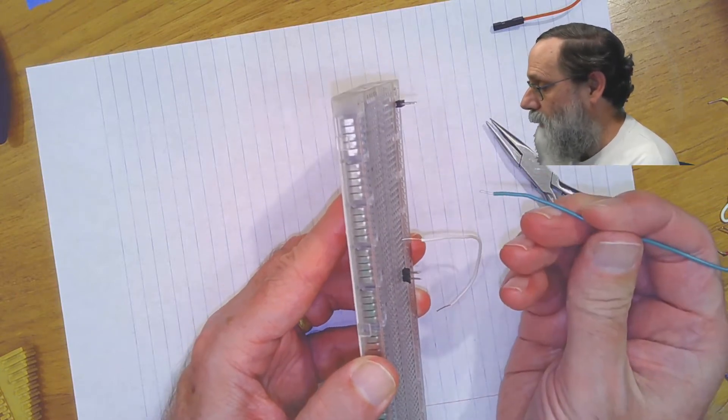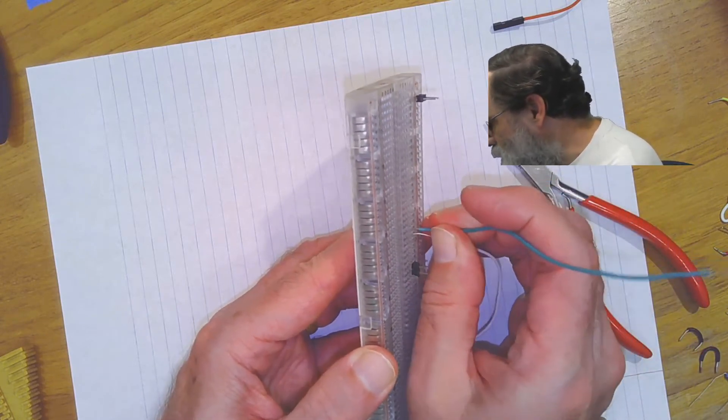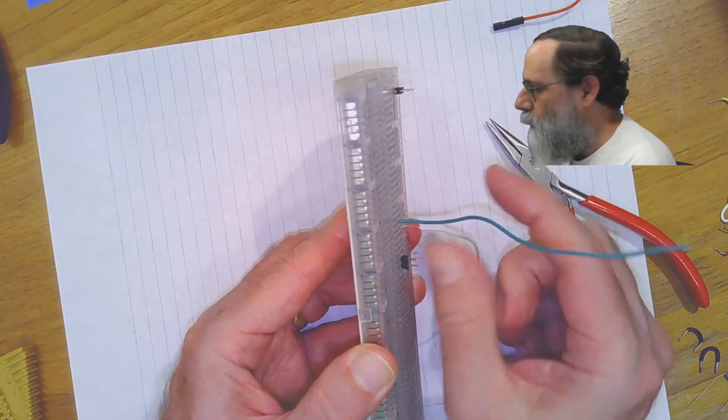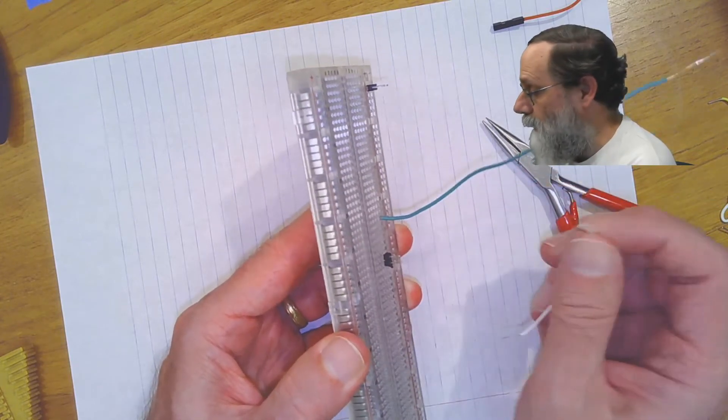You never want to have bare wire exposed on the breadboard, so that is way too much stripping. The amount that you should have is about three millimeters, so that when you push it in, it goes all the way down so the insulation touches the board, and there's no bare wire exposed.